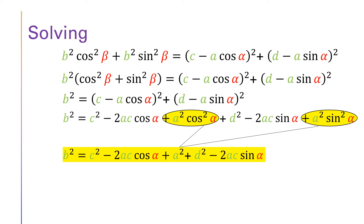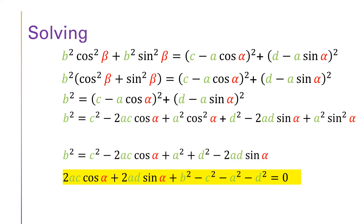A squared substitutes the two terms: a squared times cosine squared alpha and a squared times sine squared alpha. We can also reorganize the equation by bringing all terms to the left side. Thus, we have one equation which is only expressed in terms of cosine alpha and sine alpha and the four parameters A, B, C, and D.